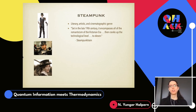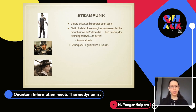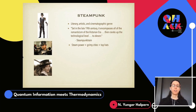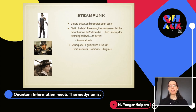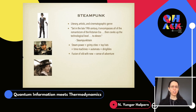Steampunk works feature old settings — some of the earliest factories, men in top hats, women in petticoats — together with futuristic technologies such as time machines, robots, and flying ships. This blend of old and new creates a wonderful sense of nostalgia and adventure.